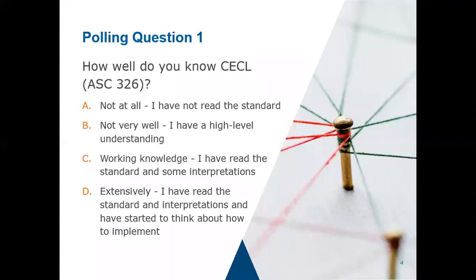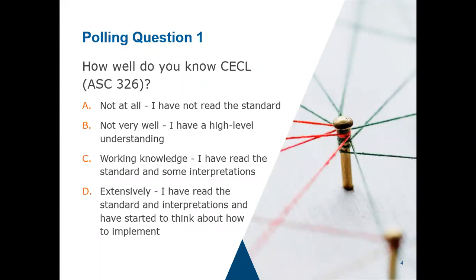As most of us know, convergence didn't take place — international standards went their own direction and actually started adopting this much earlier than what we're seeing in the US. Most of those international organizations, when doing IFRS 9, were hoping to run parallel with their models well before adoption, but that just did not happen. This is probably the right decision to make, given the burden and the knowledge that needed to be gained, especially for organizations not familiar with what credit really means to their organization.